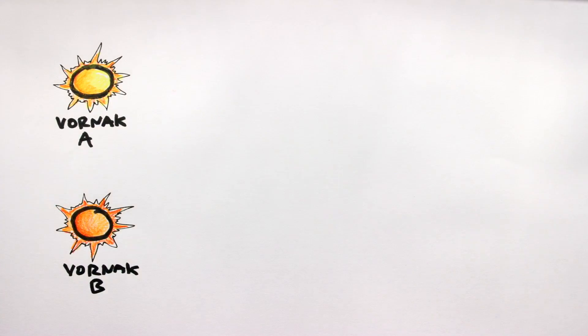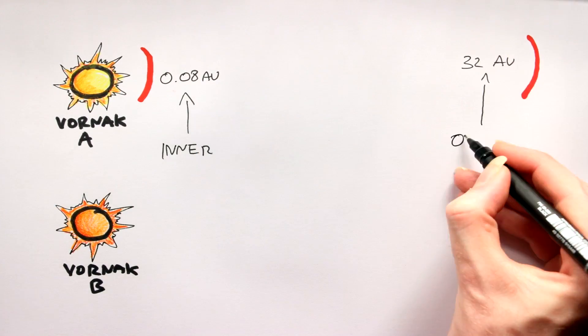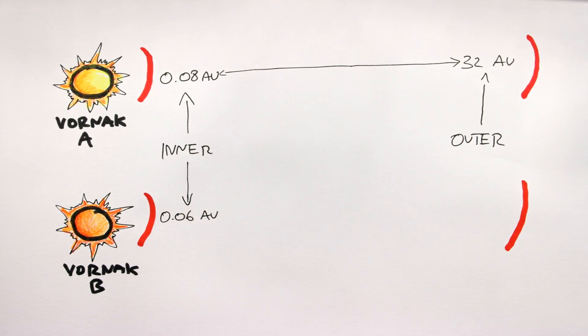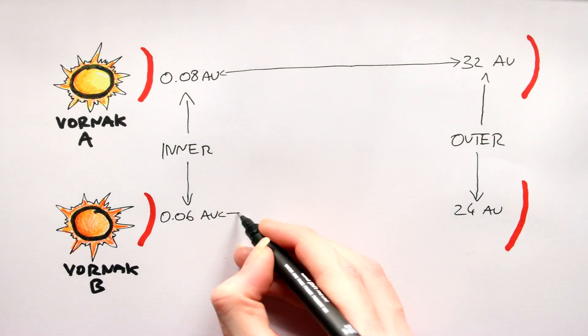After doing the maths, it turns out that Vornak A can have planets orbiting it between 0.08 and 32 AU, and Vornak B between 0.06 and 24 AU.